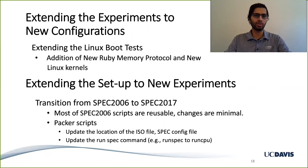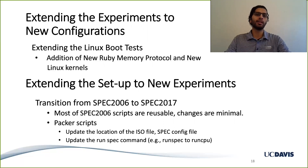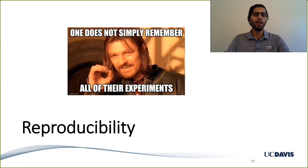Extending experiments to a totally new experimental setup is also not hard with Gem5Art — you typically just update your launch scripts to point to the new setup. For example, going from SPEC 2006 to SPEC 2017 was very straightforward: all we had to do was update the benchmark names in the SPEC 2006 launch scripts, and in the Packer scripts update the location of the disk image ISO file and the SPEC configuration file needed to compile the benchmarks. Above all, with Gem5Art we don't have to rely on manual backups or random documentation for reproducibility — Gem5Art automatically provides this reproducibility.